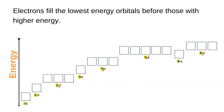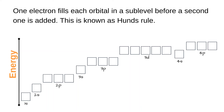The number in front of the s, p, or d tells us what shell the orbital is in. So 1s is the s orbital in the first shell, and 2s is the s orbital in the second shell. When electrons are filling the orbitals in the same shell and same sublevel, one electron is added to each orbital first and then they double up.